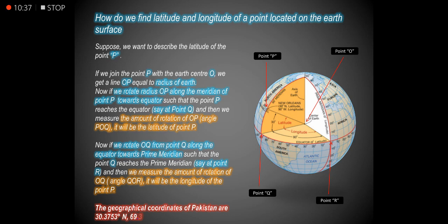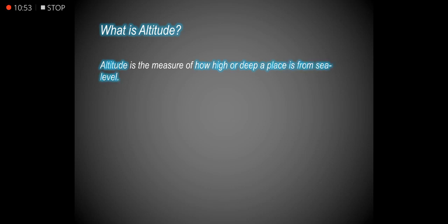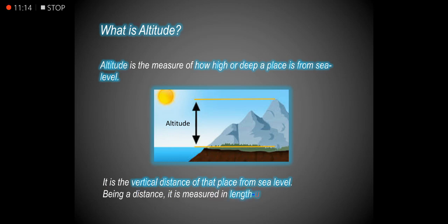The geographical coordinates of Pakistan are 30° North and 69° East. Altitude is the measure of how high or deep a place is from sea level — it is the vertical distance of that place from sea level. Being a distance, it is measured in length units like meters, feet, etc.